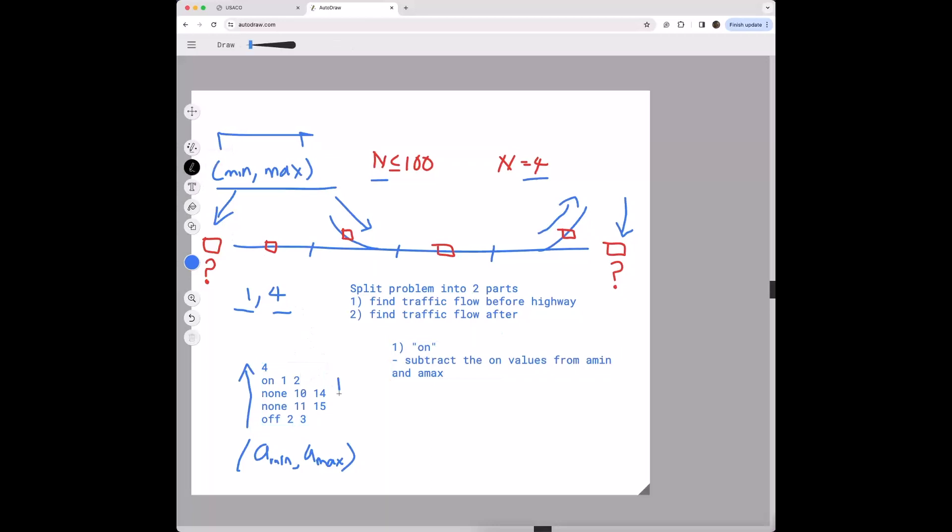And so again let's just focus on these two segments of the road. So we have one and two coming into the highway and then 10 and 14 before, so we're trying to find the most specific values.